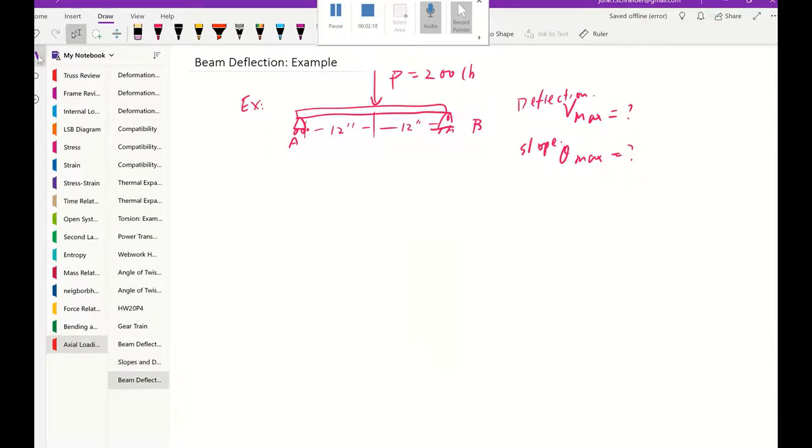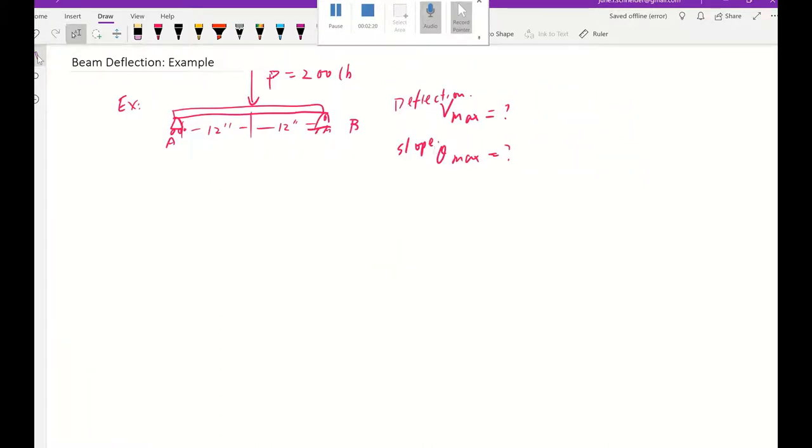Go back to this one. Our maximum deflection is going to be P L cubed over 48 EI. So we'll be at that point. Now let's go ahead and solve that.